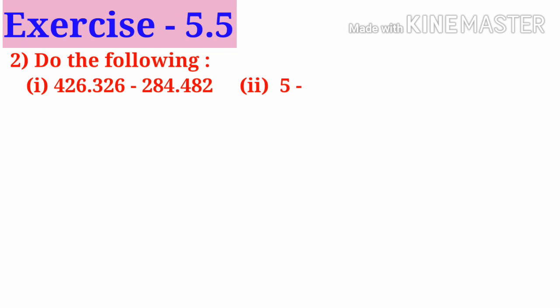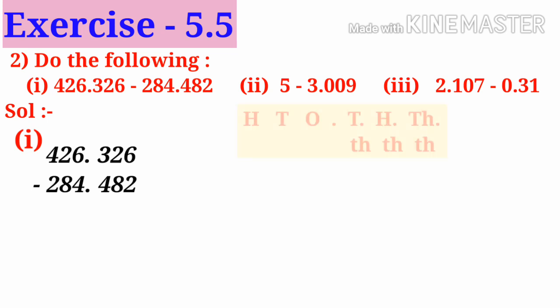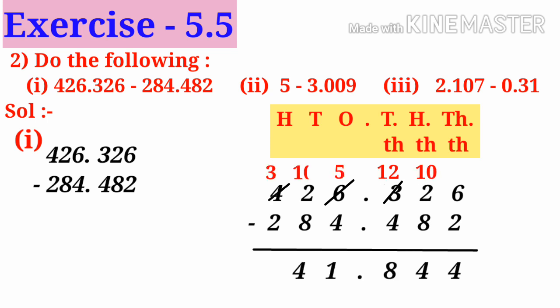Number 2: do the following. Solution, number 1: 426.326 minus 284.482. Observe that the maximum decimal places are 3, so these are like decimals. Place them in their exact place values and subtract: 6 minus 2 is 4, 12 minus 8 is 4, 12 minus 4 is 8, 5 minus 4 is 1, 12 minus 8 is 4, and 3 minus 2 is 1. So 141.844 is the answer.